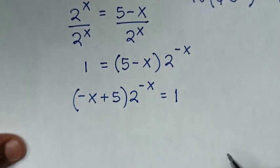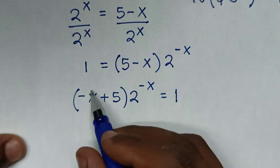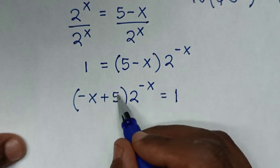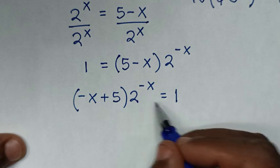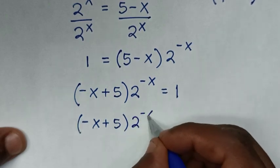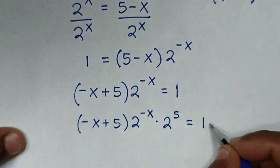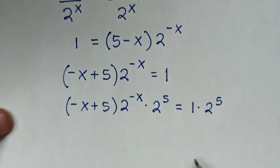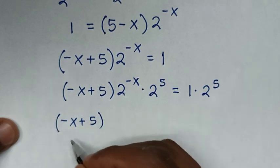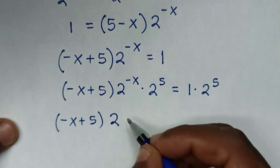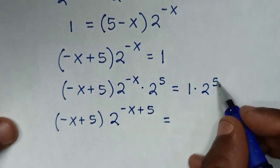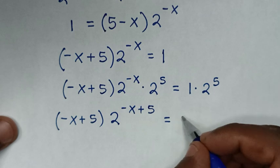Now we have negative x in the base and negative x in the power. To get 5 in the power as well — since we have 5 in the base — we multiply both sides by 2 to the power of 5. So it becomes (negative x plus 5) times 2^(negative x) times 2^5 equals 2^5. Since they share the same base of 2, this gives us (negative x plus 5) times 2^(negative x plus 5) equals 32.